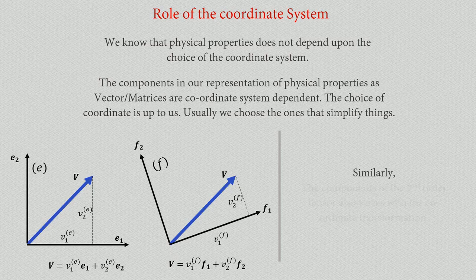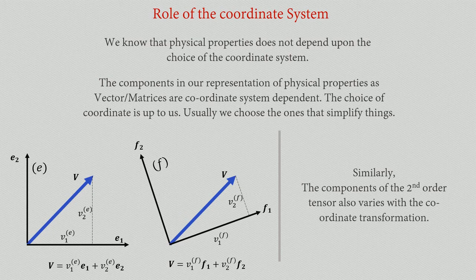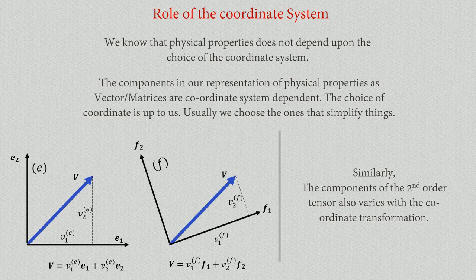Similarly, we can think of such coordinate transformations for stresses, which are second-order tensors. The nine components — of which only six are actually unique — will change as we change the coordinate system.